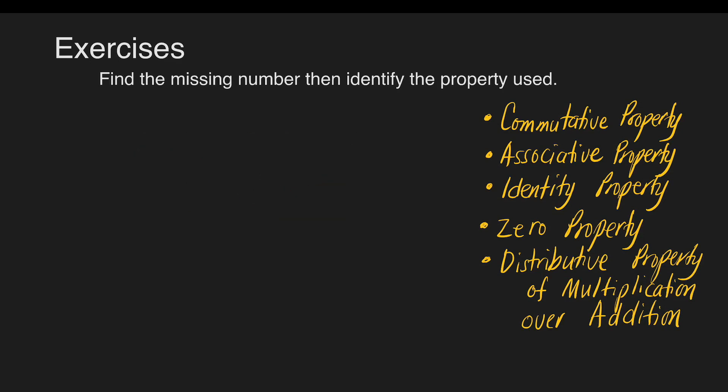Next: 88 times 1 is equal to blank. The answer is 88. Any number multiplied by 1 is equal to that number. The property used is the identity property of multiplication.